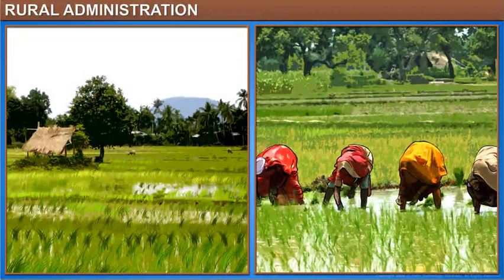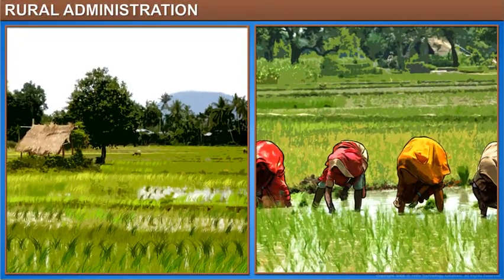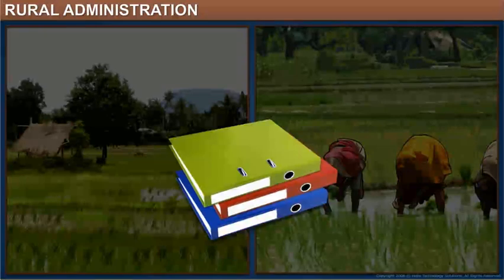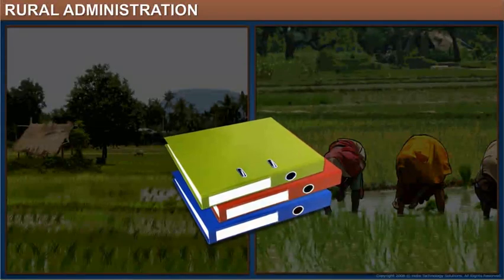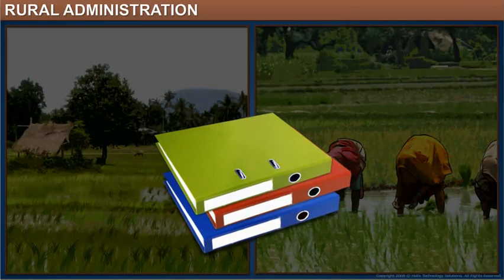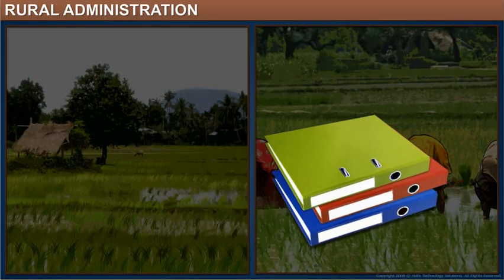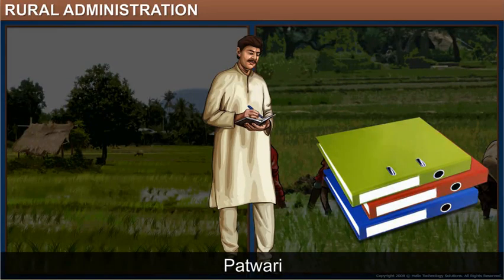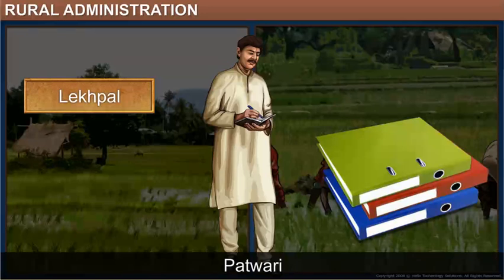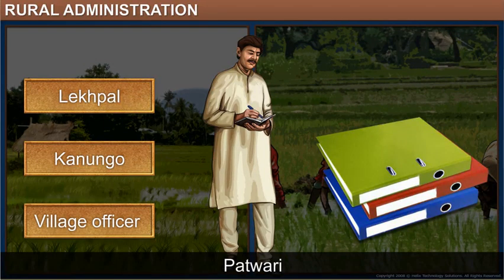Most of the land in villages is used for farming, and the government is responsible for maintaining proper records of these lands. The task of maintaining the land records and collecting revenue from the farmers is done by the village Patwari. A Patwari is also known as Lekhpal, Kanungo, and village officer in different regions of India.